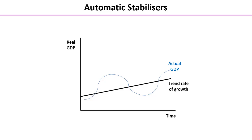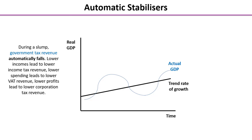During a slump or a recession, government tax revenue falls automatically. People have less income, so it leads to lower income tax revenue. Lower consumer spending leads to lower VAT revenue and potentially less excise duty revenue. Lower profits lead to lower corporation tax revenue. You could also explore the impact of many different taxes and their relationship with tax revenue in a slump.